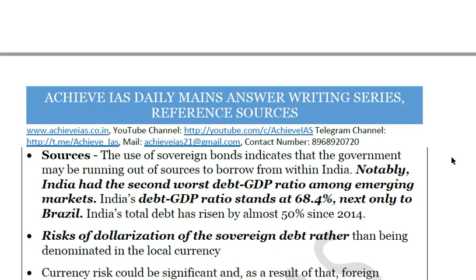The use of sovereign bonds also indicates that the government may be running out of domestic sources to borrow from within India, sending a message that the government doesn't have enough domestic sources and must turn to global markets. This is not a good message. Also, though sovereign external debt is less than 5%, India's total debt-to-GDP ratio is 68.4%, which is among the worst among emerging markets and next only to Brazil.